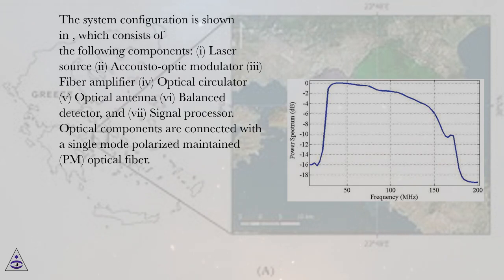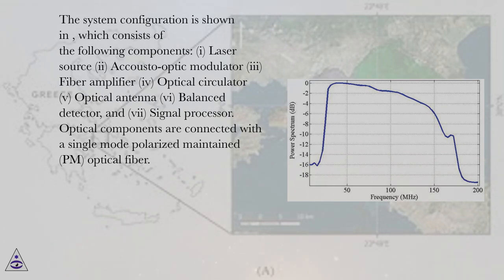The system configuration consists of the following components: (1) laser source, (2) acousto-optic modulator, (3) fiber amplifier, (4) optical circulator, (5) optical antenna, (6) balance detector, and (7) signal processor. Optical components are connected with a single-mode polarization-maintained (PM) optical fiber.